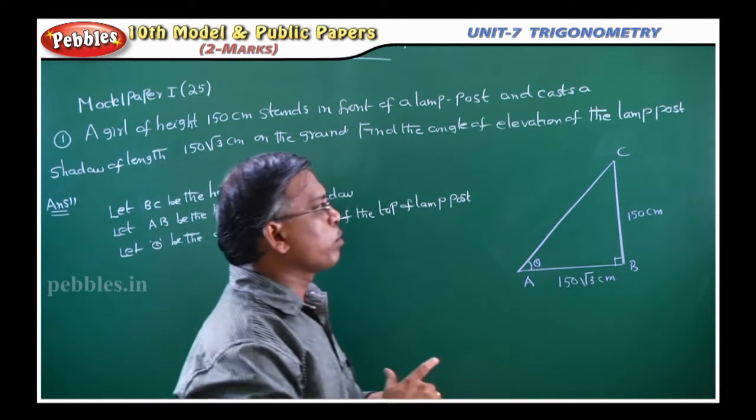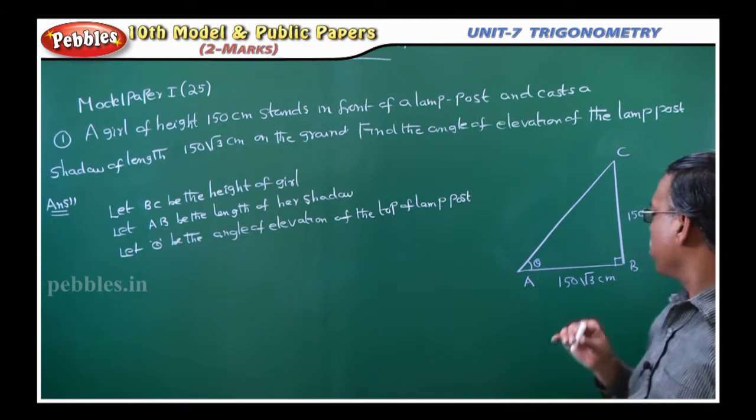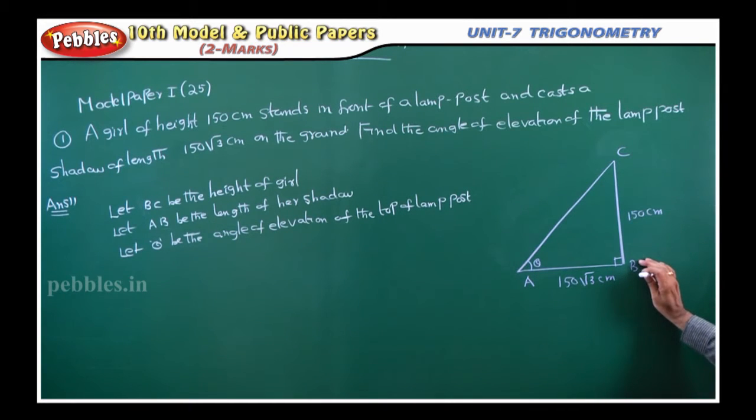First of all, in these kind of problems you have to understand the diagram. What they are asking is some girl is standing here near the lamp post, and the height of the girl is given as 150 centimeters. BC I am assuming as height of the girl, which is given as 150 centimeters.